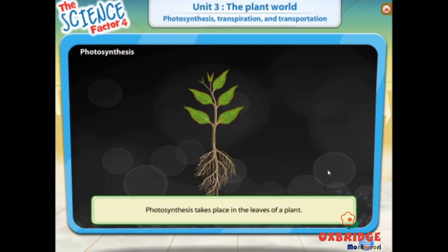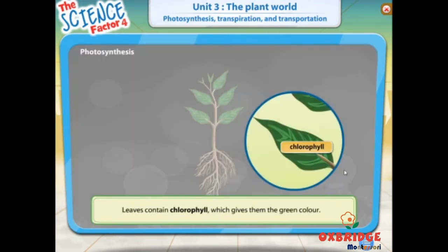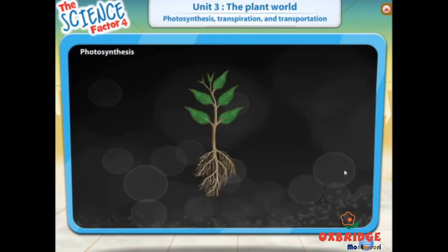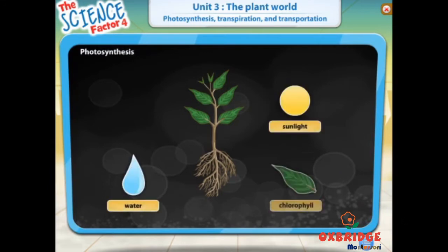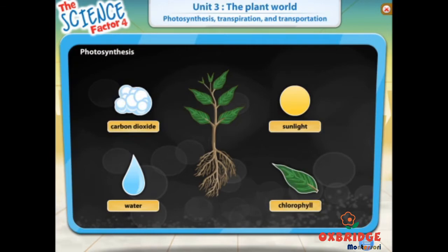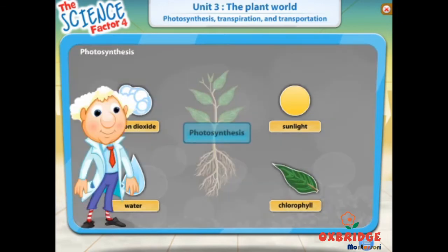Photosynthesis takes place in the leaves of a plant. Leaves contain a green substance called chlorophyll. Photosynthesis takes place in the presence of sunlight, water, chlorophyll and carbon dioxide. Click on the word photosynthesis to know how the process works.